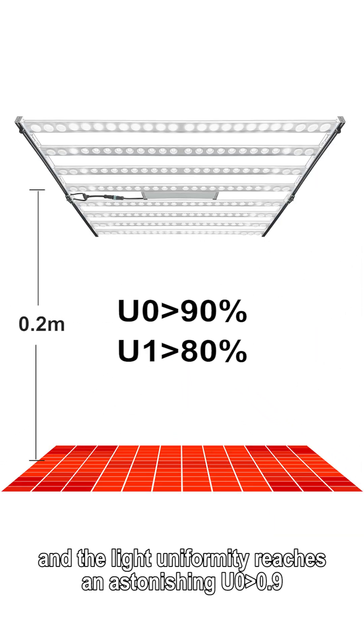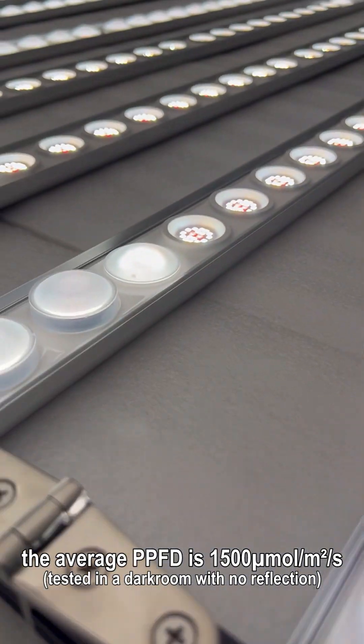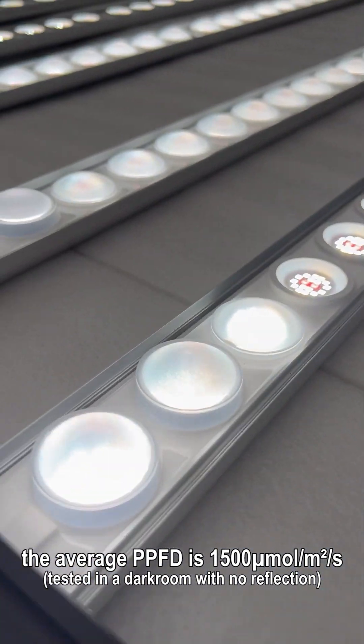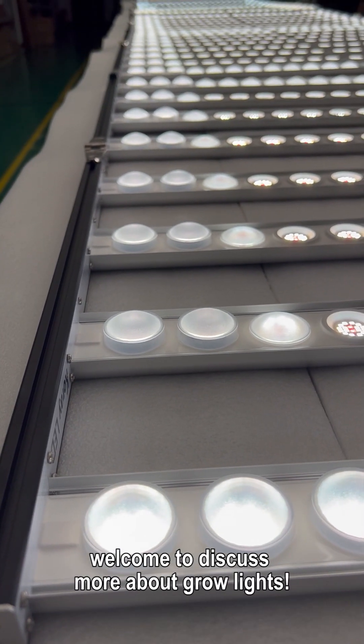At a hanging height of 0.3 meters, the average PPFD is 1500 μmol/m²/s. I am a grow light engineer. Welcome to discuss more about grow lights.